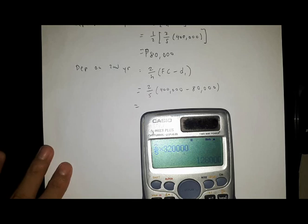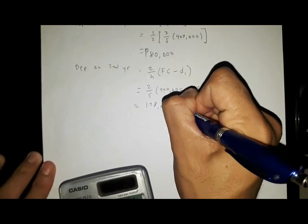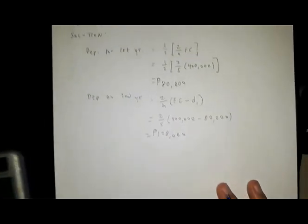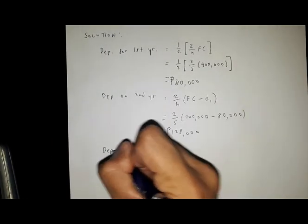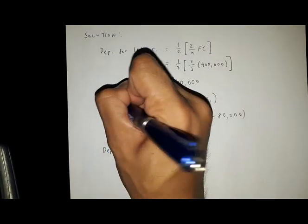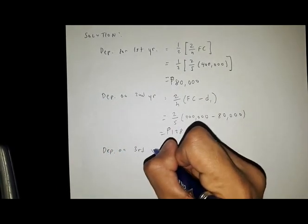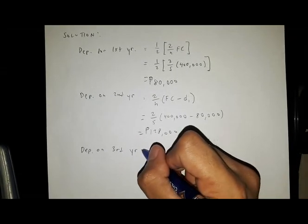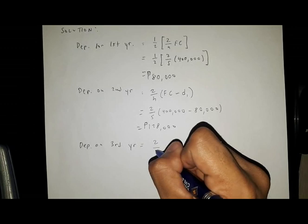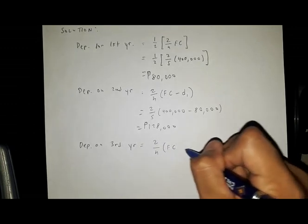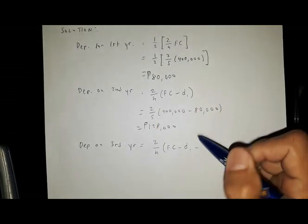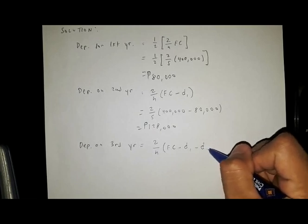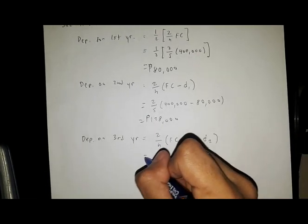That gives us D2 equal to 128,000 pesos. Now we are required to solve for the depreciation on the third year. Using the formula: 2 over n times (FC minus D1 minus D2), we substitute the values.